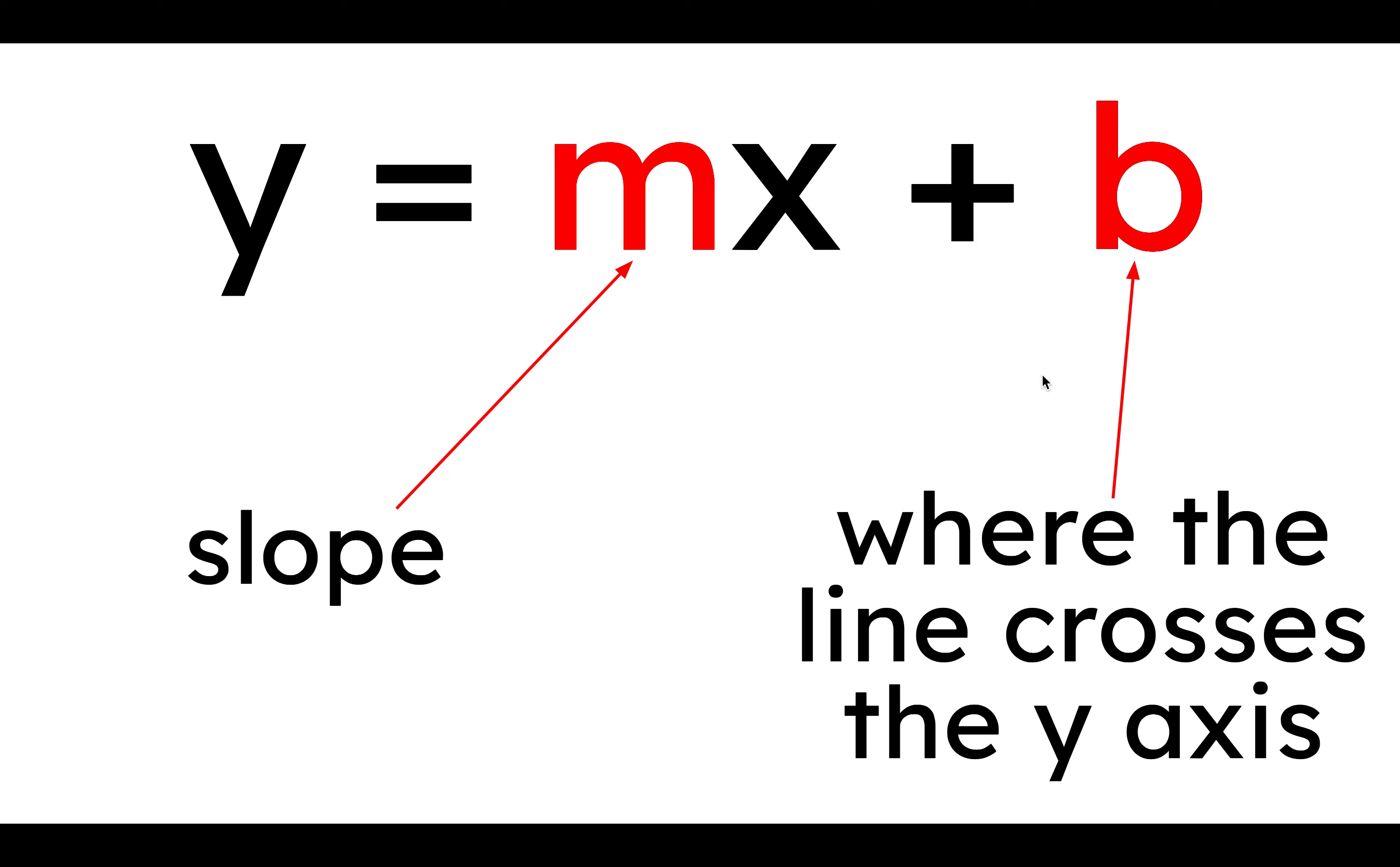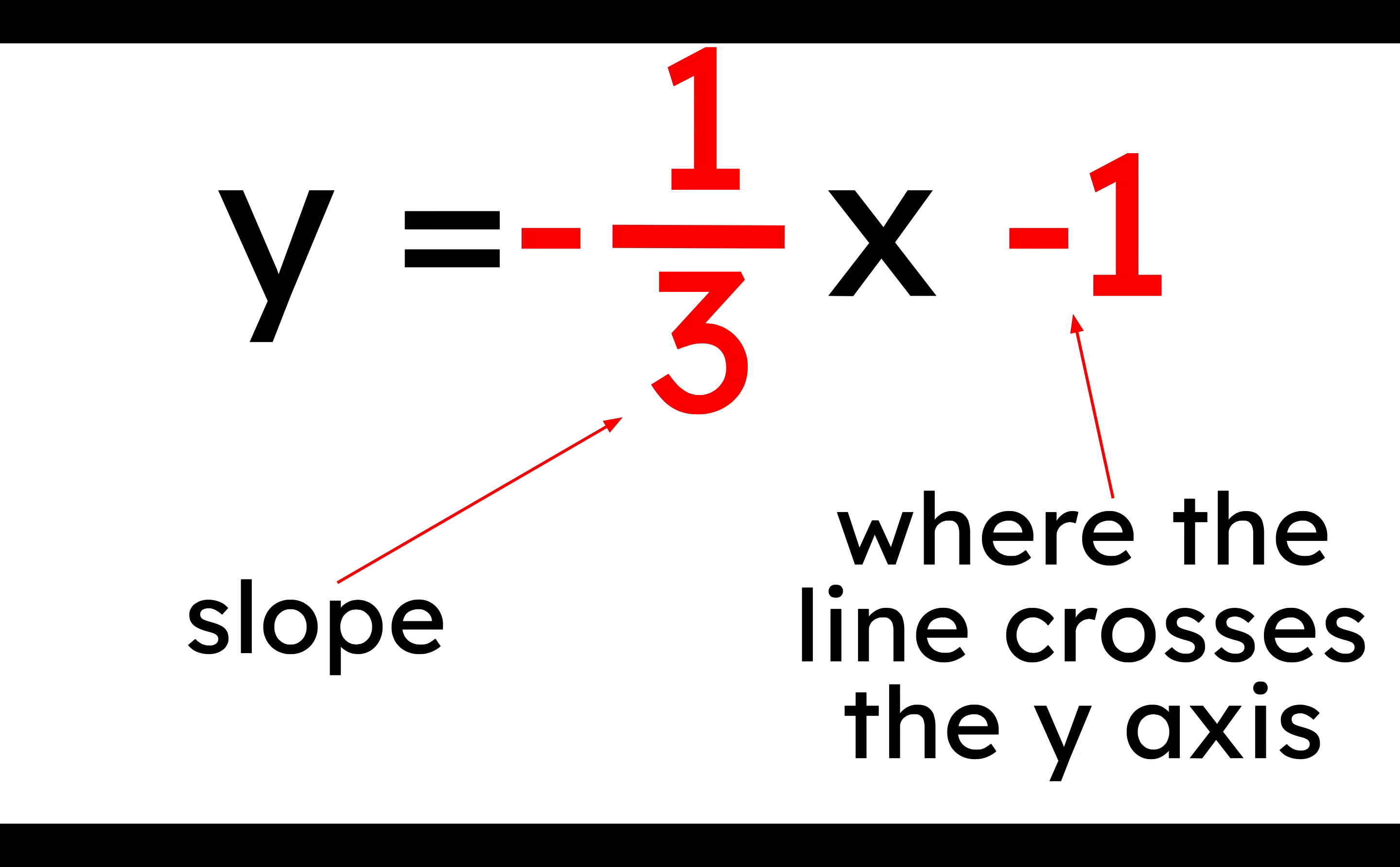And that's just how it is. Sorry, everyone. It's kind of dumb. So what does this mean? Let's look at this one first, because this one's pretty simple. Where the line crosses the y-axis. Well, here's our equation, y is equal to negative one-third, that's our slope, minus one, where the line crosses the y-axis.